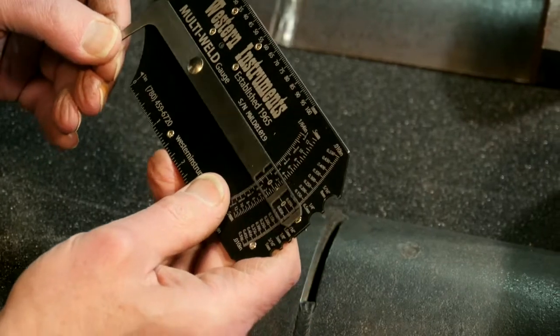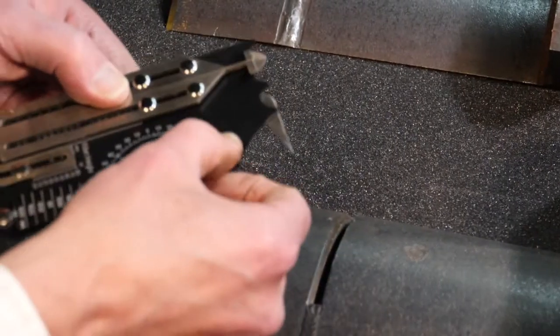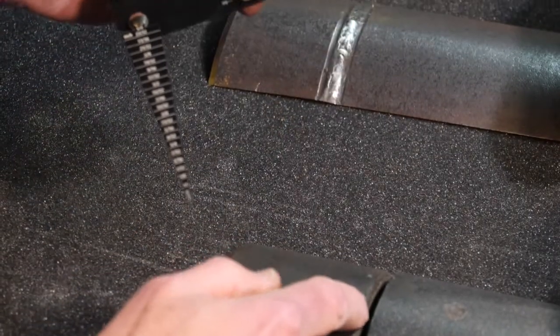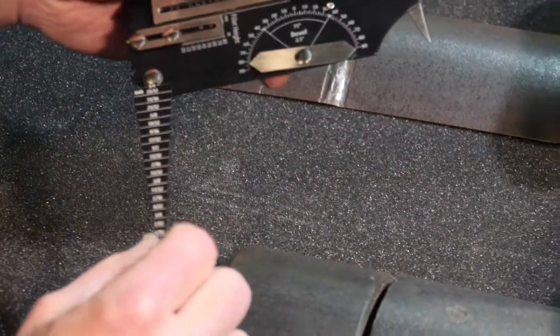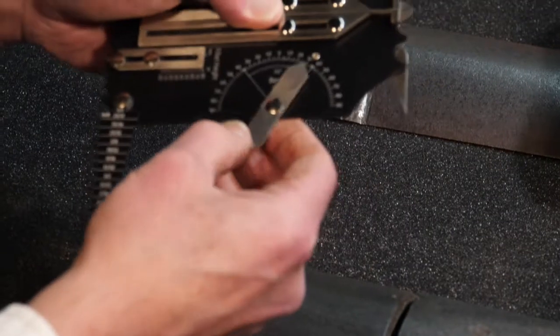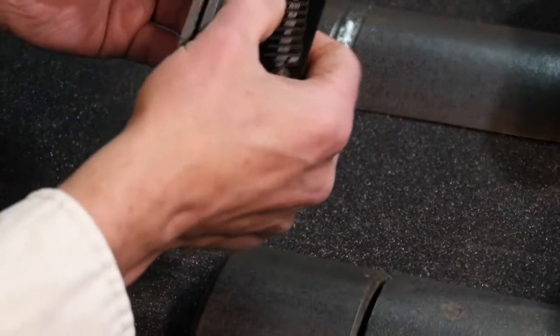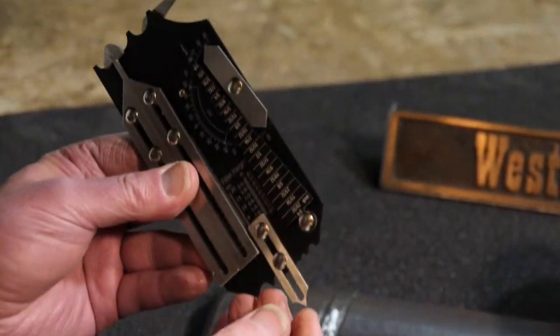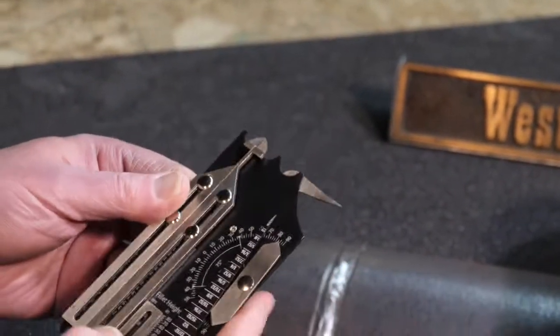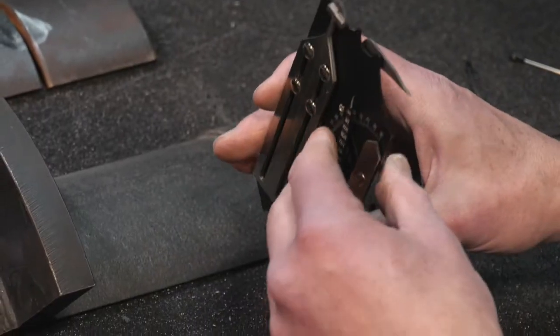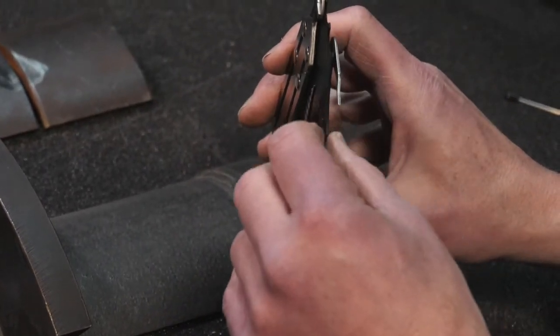There's our lever for measuring high-low, a taper gauge for measuring width and angle of preparation, fillet weld depth or height, and then internal high-low.